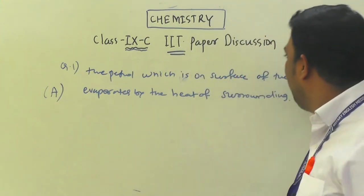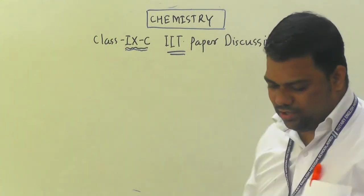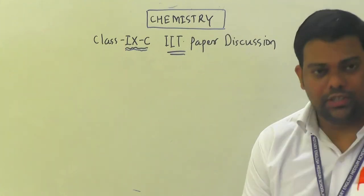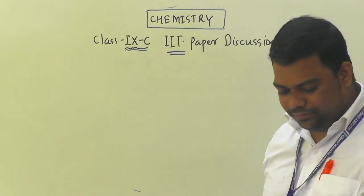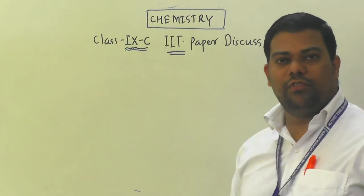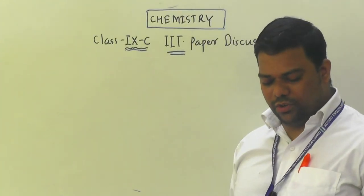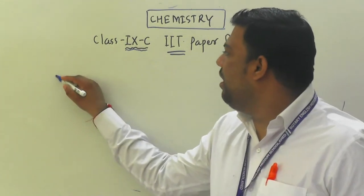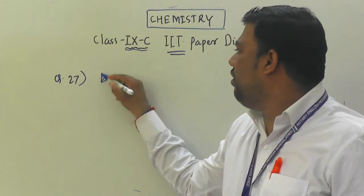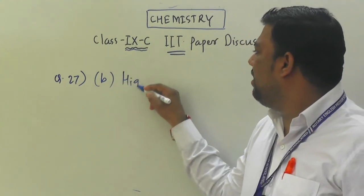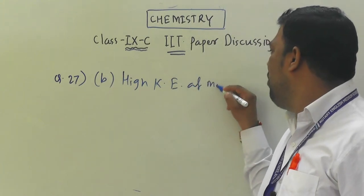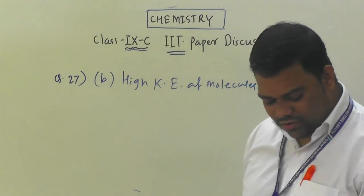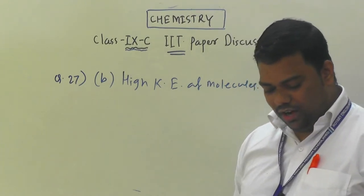Next, question number 27: the high diffusibility of gases is due to — you already know this — high kinetic energy of molecules. So question number 27, option B: high kinetic energy of molecules. These are simpler questions.